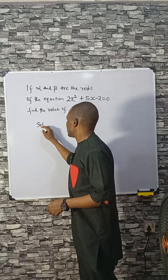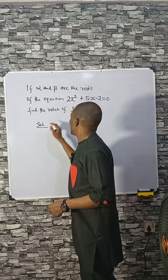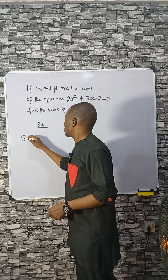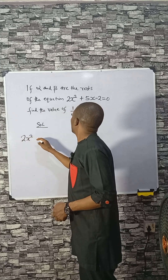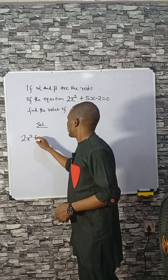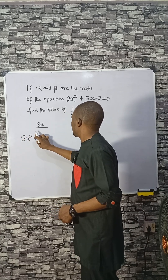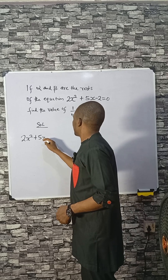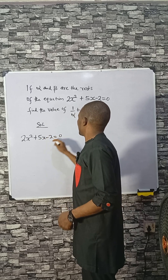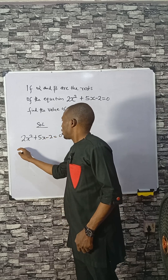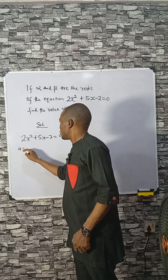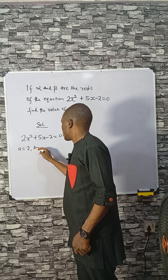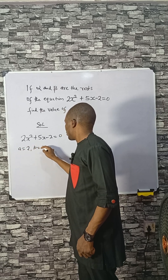First, identify and copy out the equation: 2x squared plus 5x minus 2 equal to 0. Our a here is 2, b is 5.